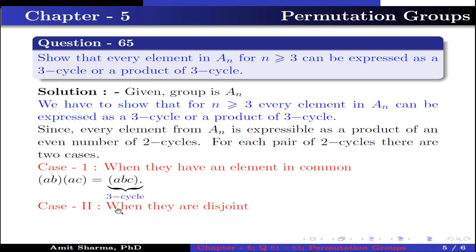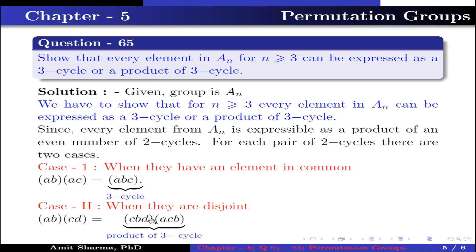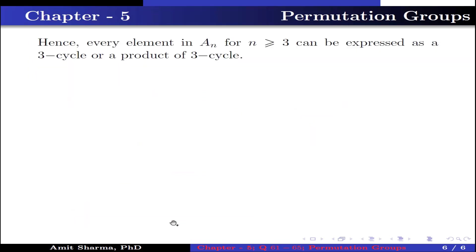Case 2: when they are disjoint — let us take the product of permutations (AB) with (CD). We get (CBD) into (AC); when we multiply these 2 permutations we get (AB)(CD), which is a product of 3-cycle permutations. Hence every element in An, for n ≥ 3, can be expressed as a 3-cycle or a product of 3-cycles.